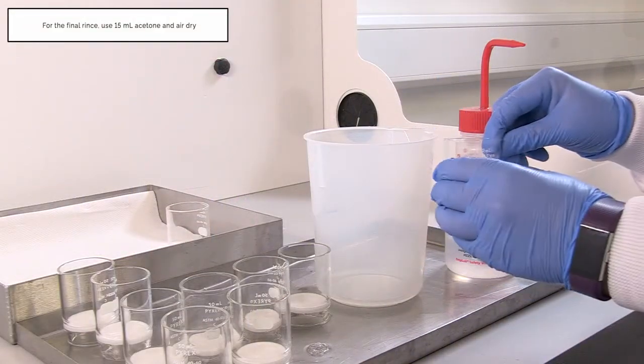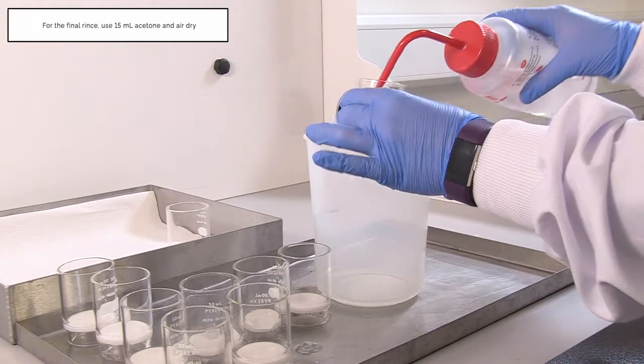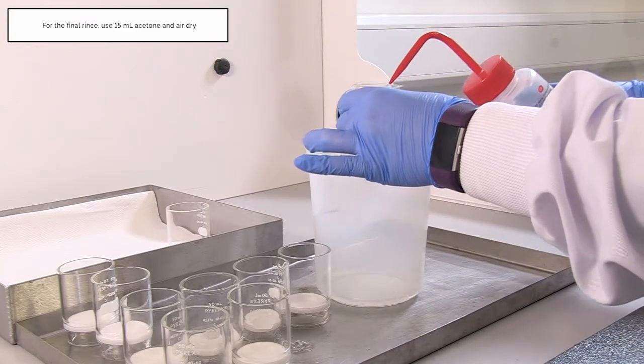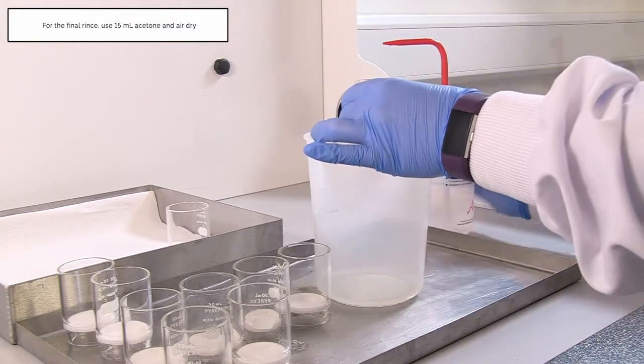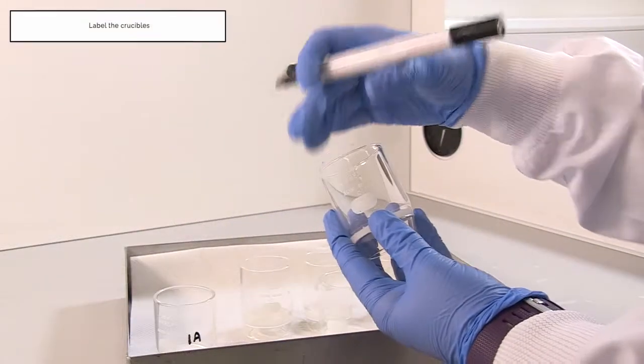For the final rinse, use 15 milliliters of acetone and air dry. Label the crucibles.